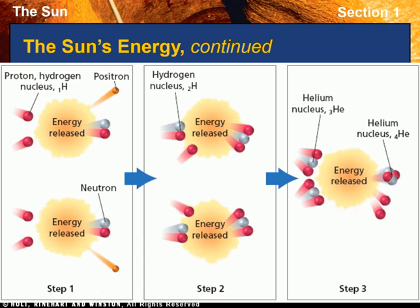A hydrogen atom — the simplest of all atoms — commonly consists of only one electron and one proton. Inside the sun, however, electrons are stripped from the protons by the sun's intense heat.